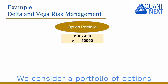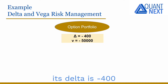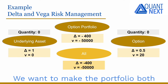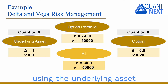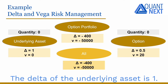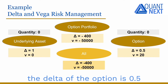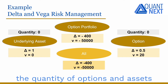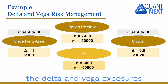Here is an example. We consider a portfolio of options on an underlying asset. Its delta is minus 400, while its vega is minus 50,000. We want to make the portfolio both delta and vega neutral using the underlying asset and an option on the same underlying asset. The delta of the underlying asset is 1 and it has no vega exposure, while we assume that the delta of the option is 0.5 and its vega is 20. So we determine the quantity of options and assets we need to buy or sell in order to offset both the delta and vega exposures of the portfolio.